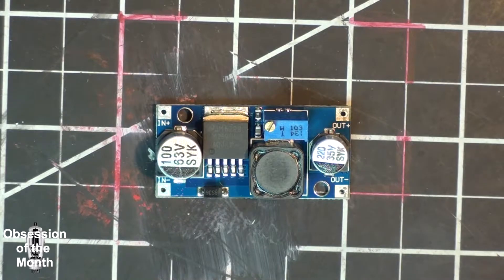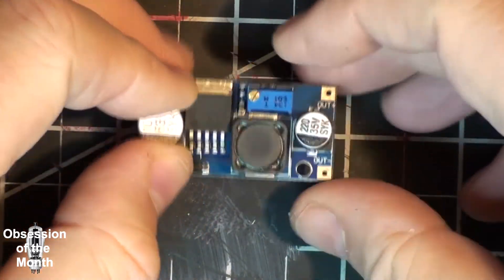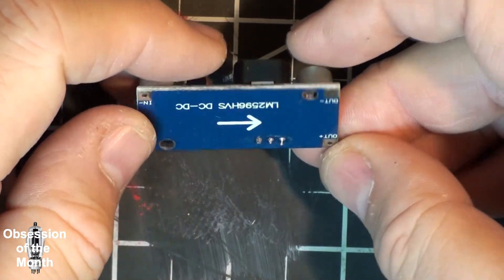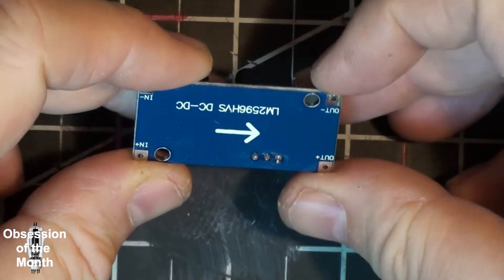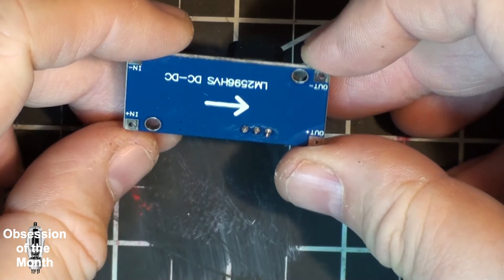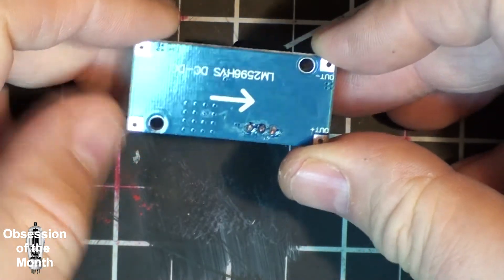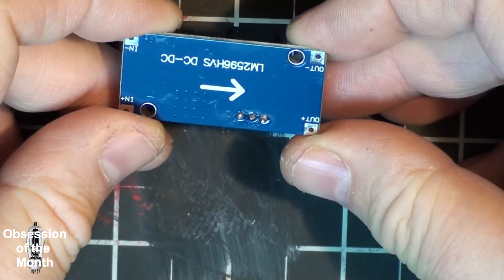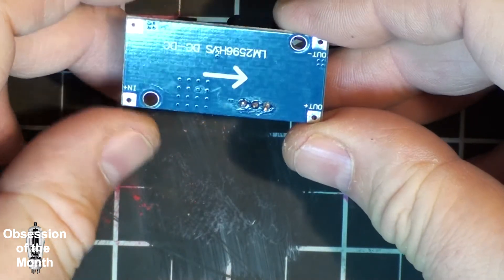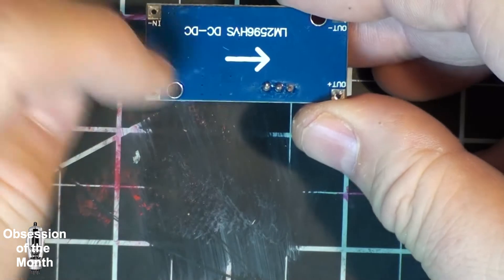It only has two mounting holes. It has plus and minus in, plus and minus out, and a helpful arrow to tell you which direction power will go.